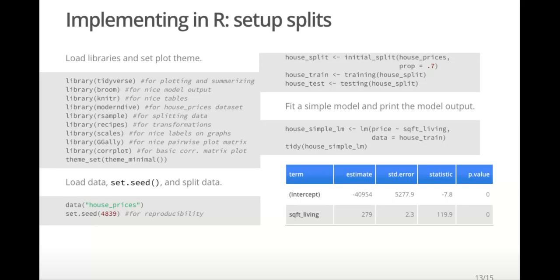The second set of code loads the data, which is from the moderndive library. Then we set a seed so that the splitting that is done after that is reproducible. The house train data set is what we will use to train our models. For now, just a simple linear regression model and to check the model assumptions.